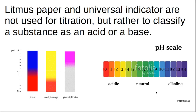Litmus paper and universal indicator are not sensitive enough for titration. However, if you have no idea what pH a solution is, you can use them to figure out whether it's an acid or a base, or whether it's a strong or weak acid. Universal indicator has a full color range from bright red to dark purple. We don't titrate with them because of this wide color range — but for a quick initial pH check, universal indicator paper is much easier.